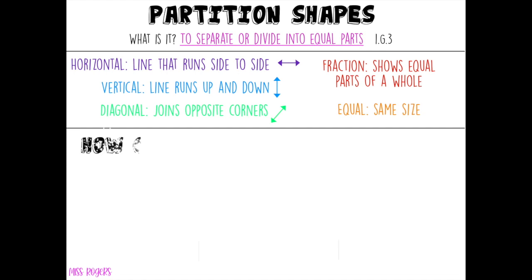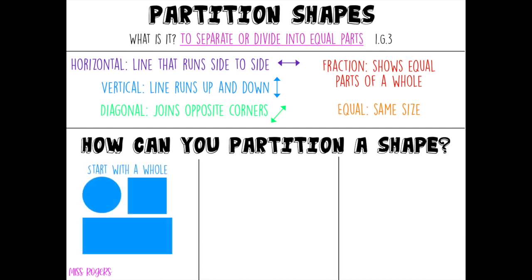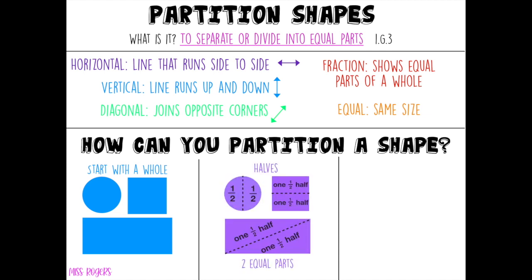Now let's begin the fun part. How can you partition a shape? Well, first you want to start with a whole. As you can see we have a whole circle, square and rectangle. Next we have halves. A half is something that is split into two equal parts. As you can see, the circle, the square and the rectangle are all split into two equal parts in different ways.